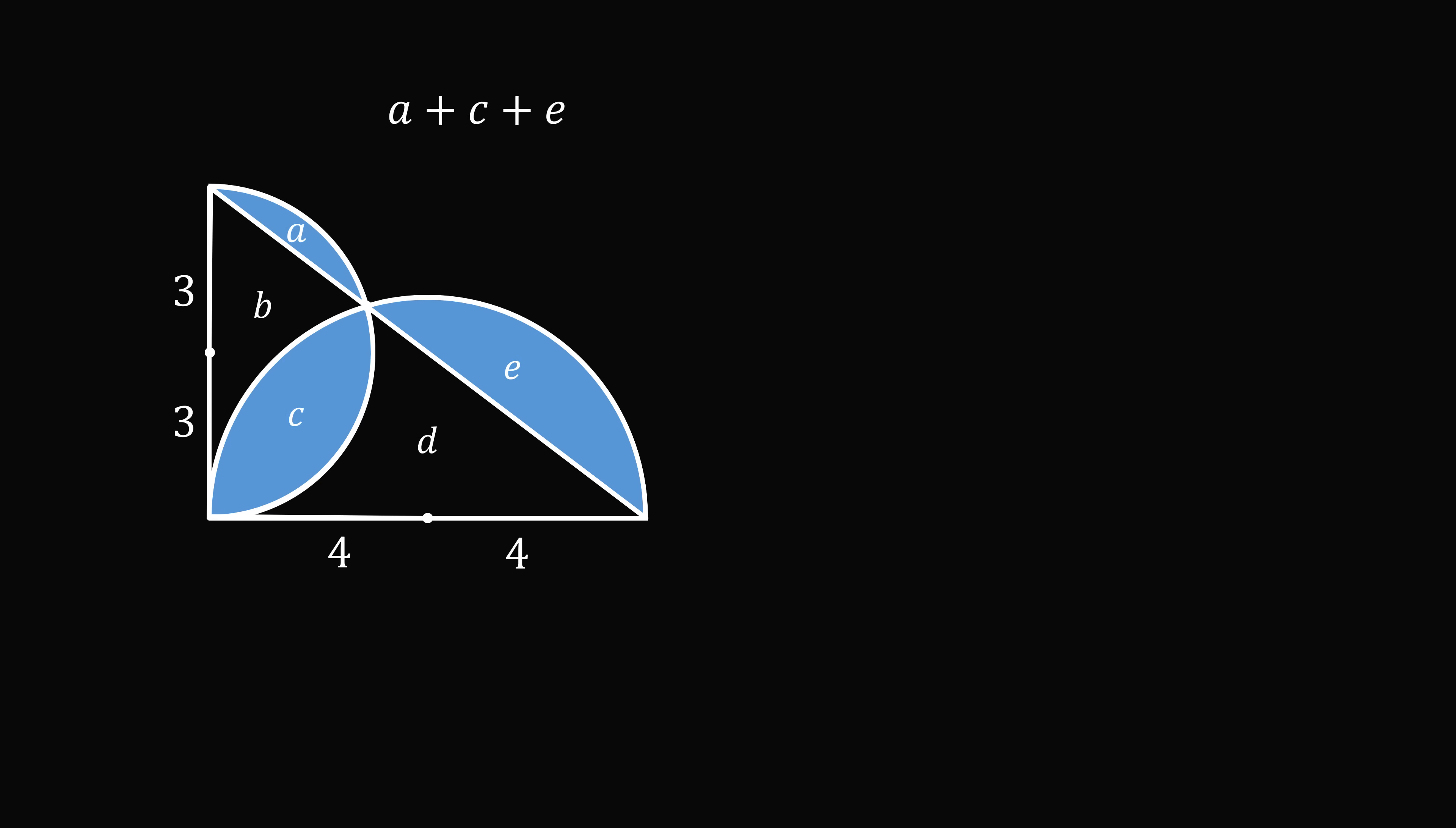We want to calculate A plus C plus E. Let's write down equations for areas that we can calculate much easier. We know that A plus B plus C will be the area of the semicircle with the radius equal to 3. C plus D plus E will be the area of the semicircle with the radius equal to 4. Finally, B plus C plus D will be the area of the right triangle with legs of 6 and 8.